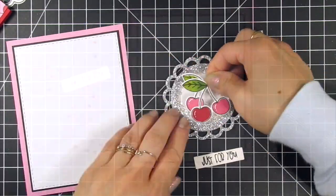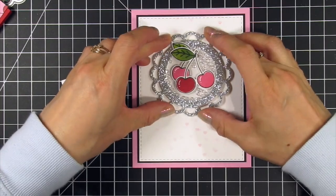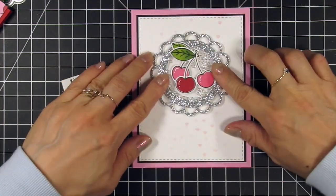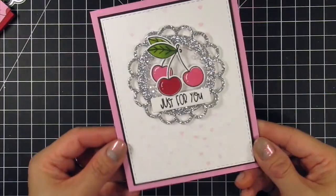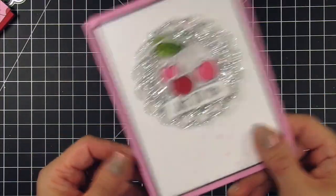For the shaker card I attached the cherries to each other and to the shaker frame using glue dots. I secured the shaker to the panel using liquid glue before tucking a shorter sentiment that reads 'just for you' underneath the cherries again using glue dots.